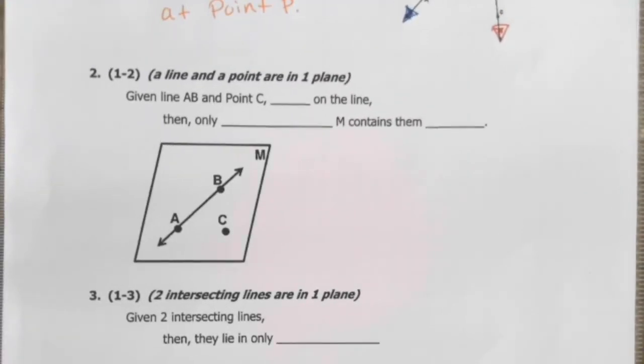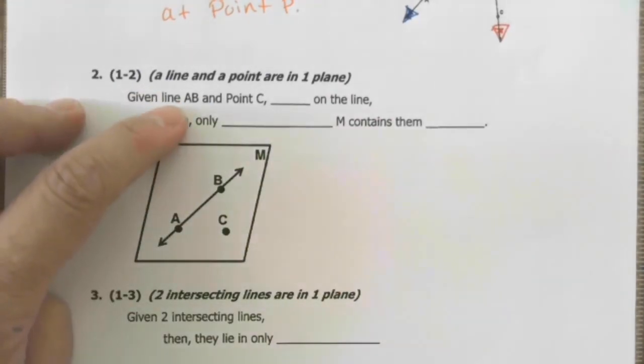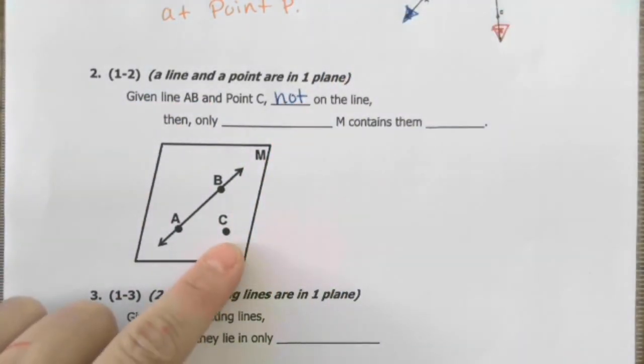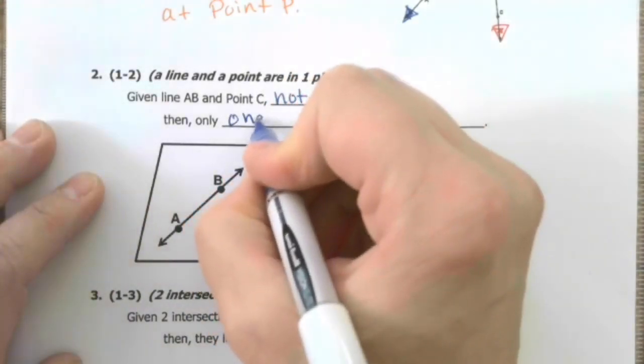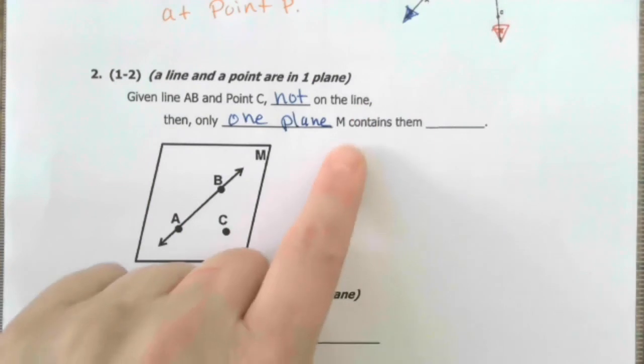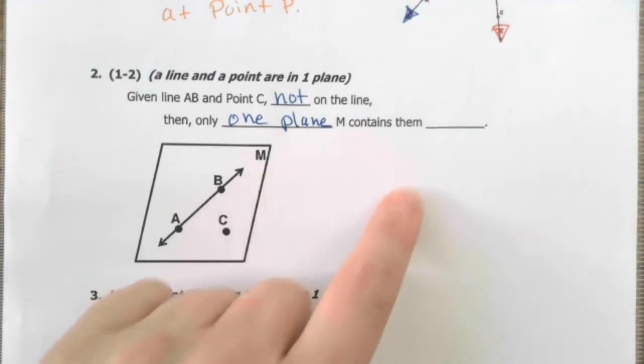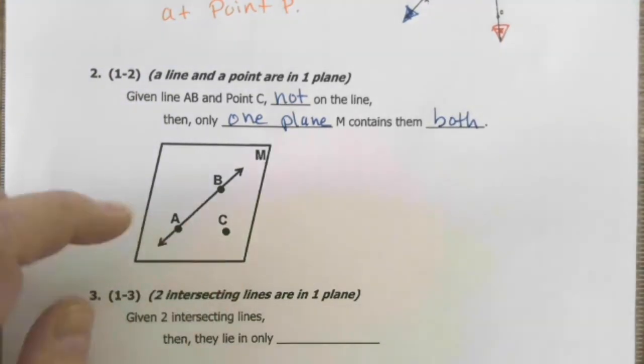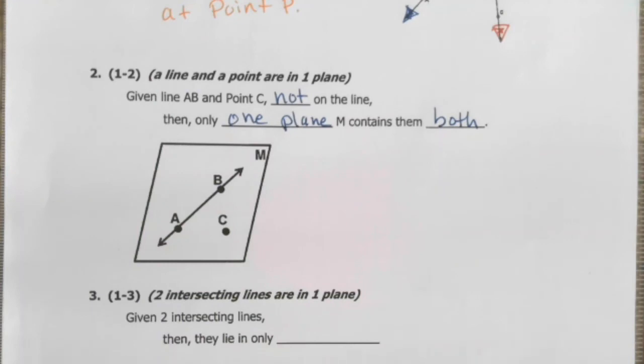Okay, now our second theorem. This is about a line and a point are in one plane. Given line AB, here it is, and point C, which is not on the line. See, it's outside. Then only one plane called M, there's its title, contains them both. So if you have a point and a line and the point isn't on the line, only one plane will hold them both. Think of it like a piece of paper. Only one piece of paper will touch both the line and the dot. The piece of paper is the plane. Planes are like paper. They have area, but not thickness.